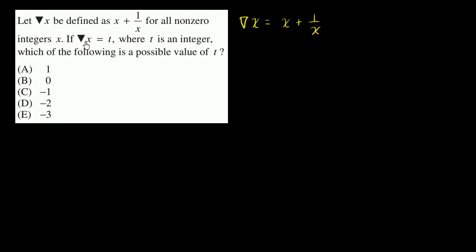If inverted or upside down triangle x is equal to t, so if this whole thing is equal to t, whereas t is an integer, which of the following is a possible value of t?